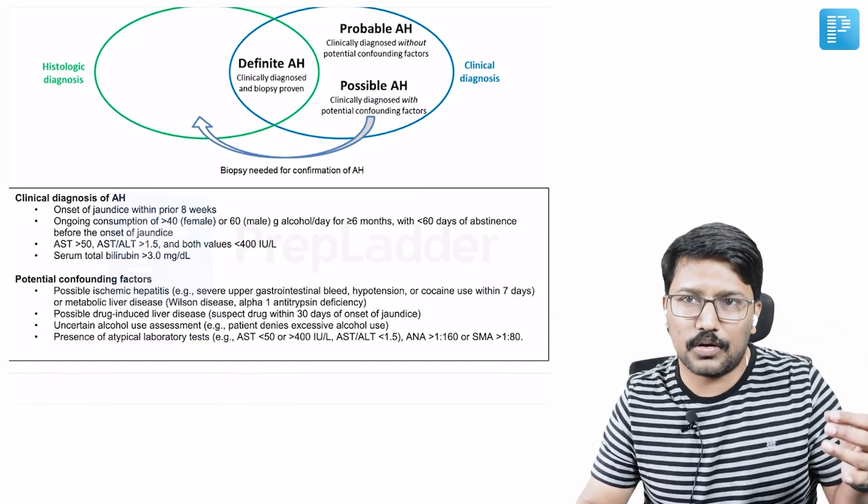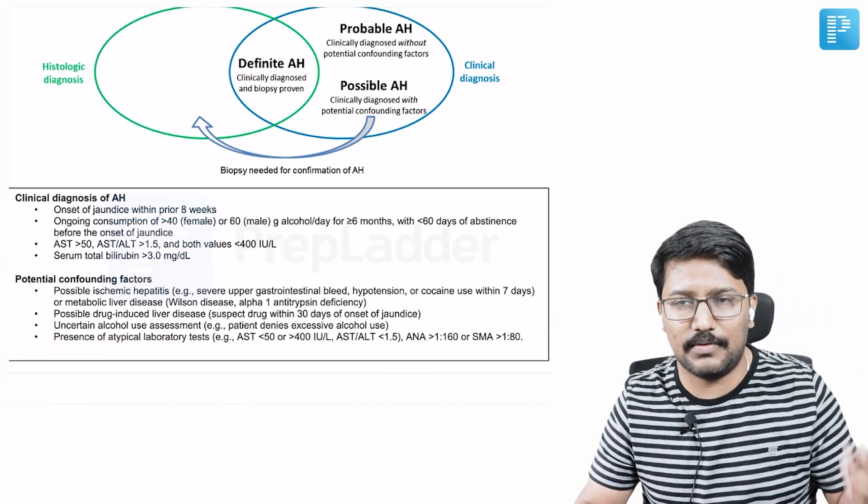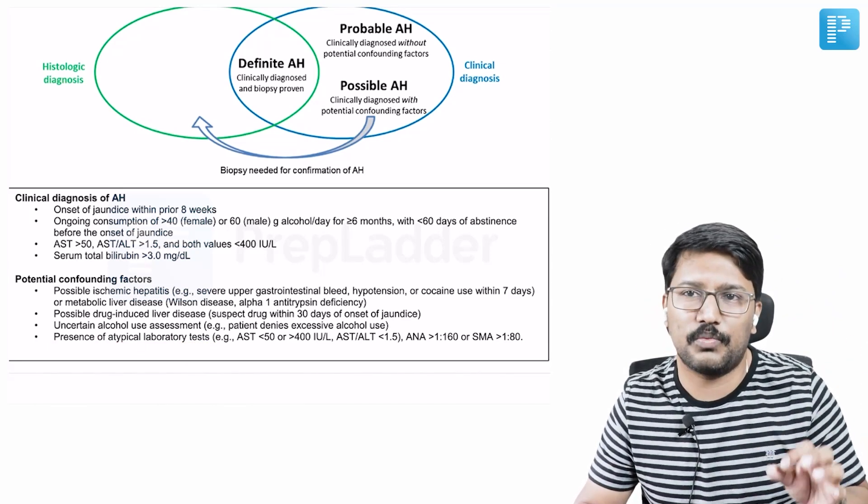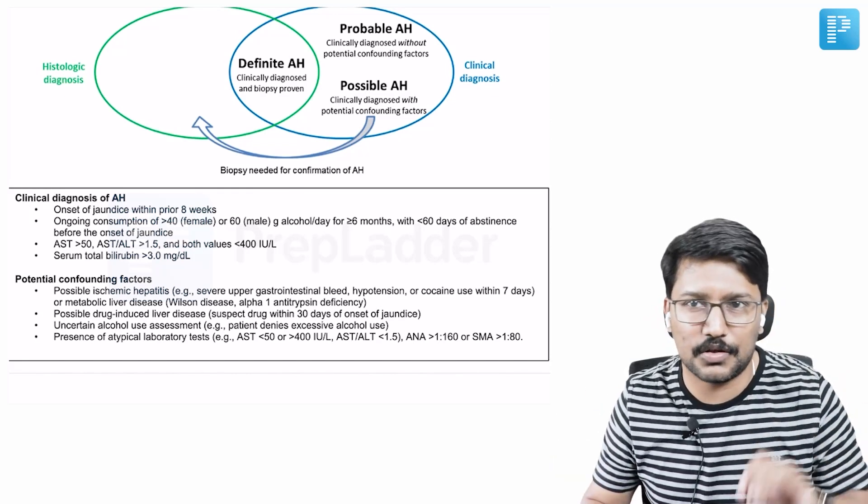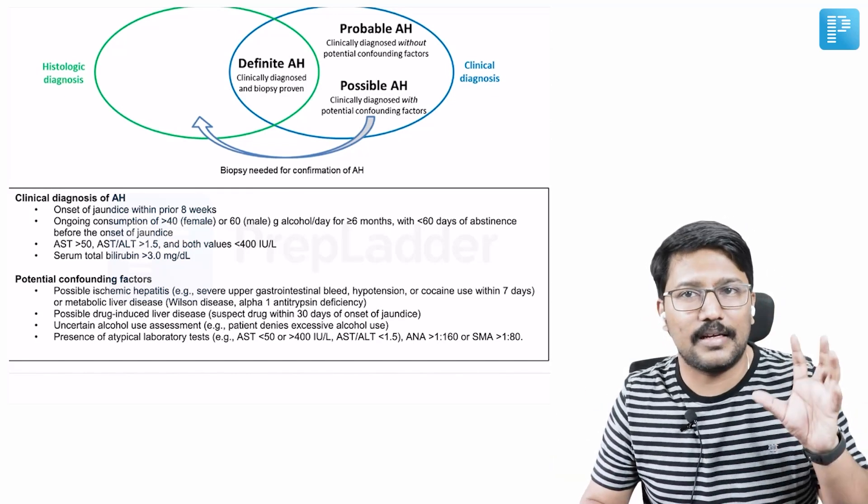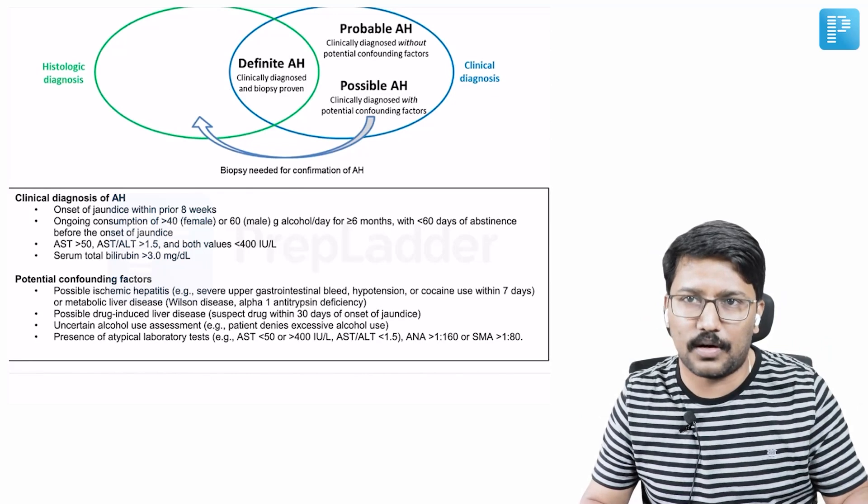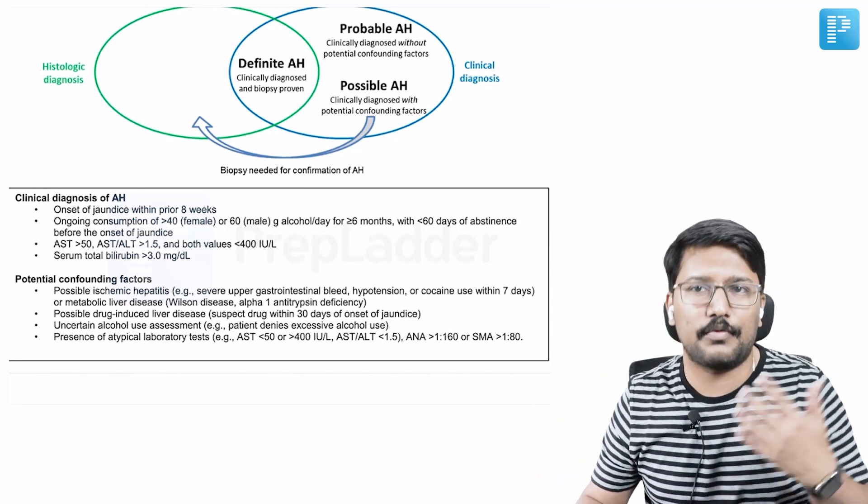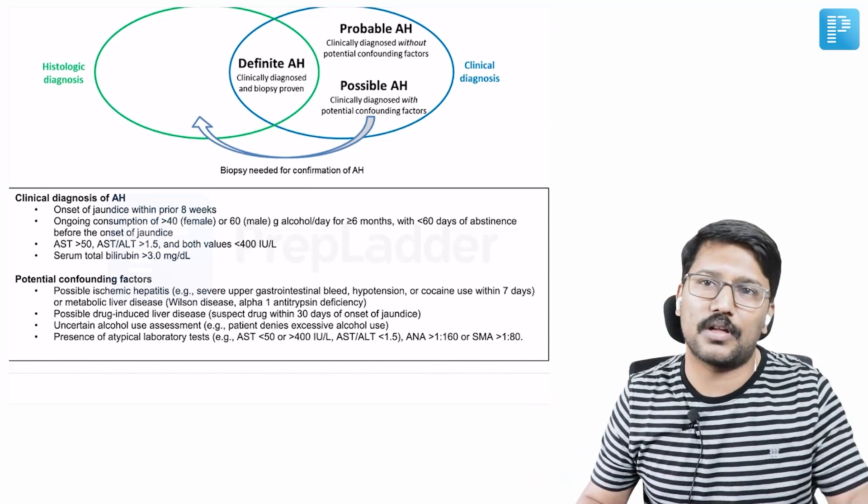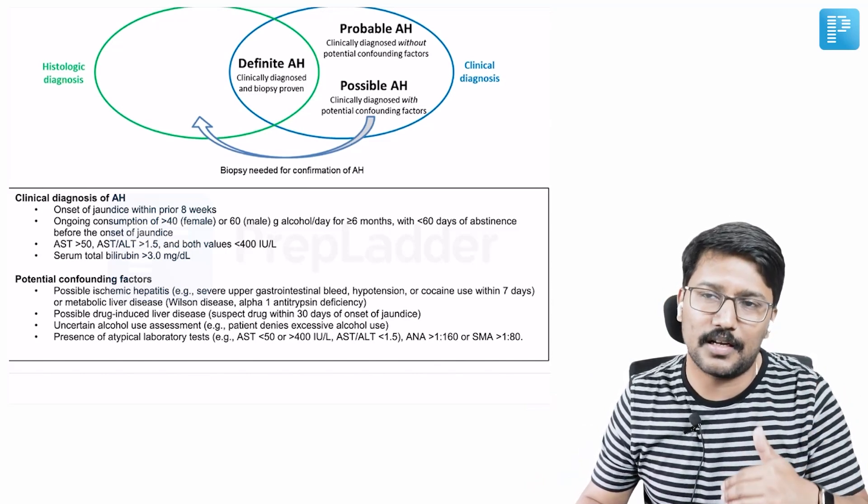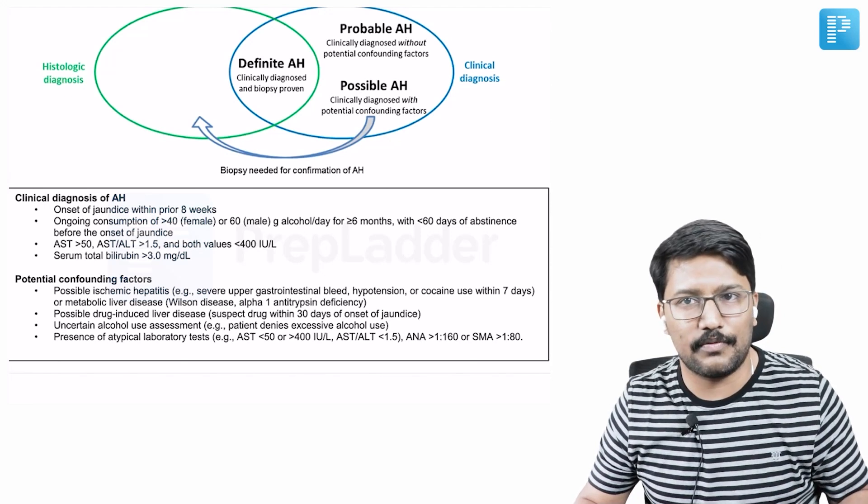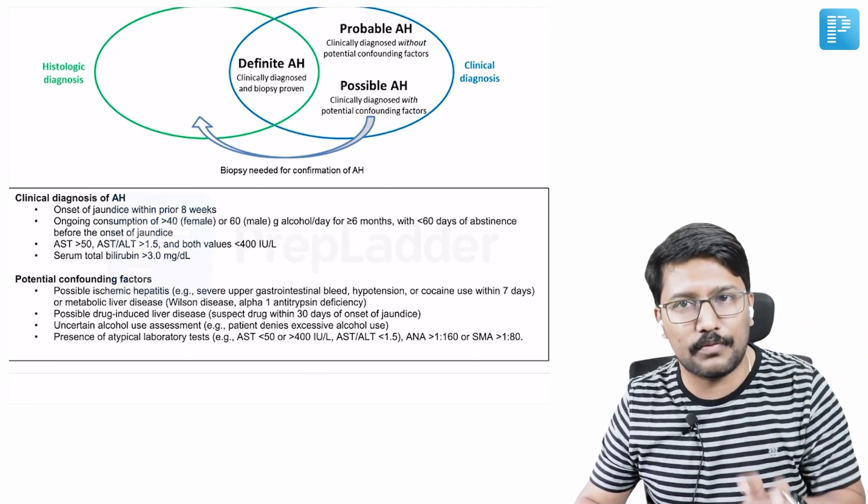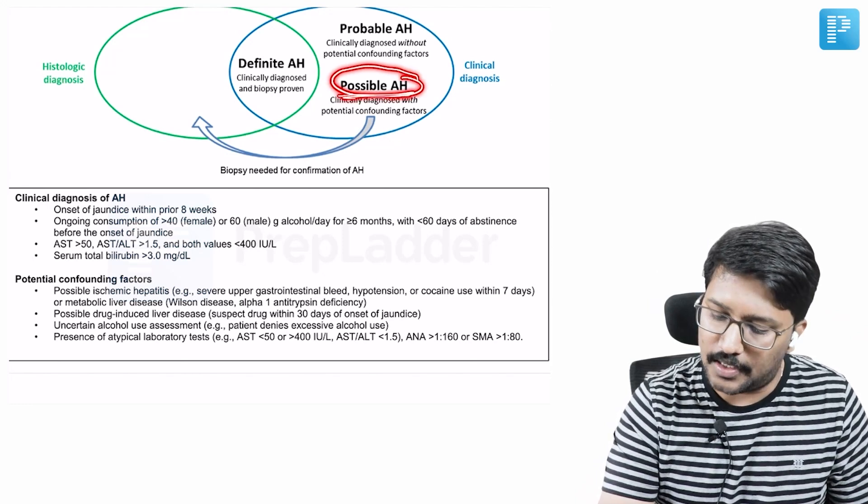Then coming to the last one: presence of atypical laboratory tests. AST levels should be elevated more than one and a half times the normal. ALT level should be elevated more than one and a half times the normal. AST by ALT ratio is supposed to be more than 1.5. The ratio should be more than 1.5, and the AST and ALT level should be less than 400. This is the bare minimum. But if these parameters are outside this range - like for example, AST or ALT is more than 400, or the ratio AST/ALT ratio is less than 1.5 - those are all considered as confounding factors. If you have a clinically confirmed diagnosis but have confounding factors, then you call it as possible AH.